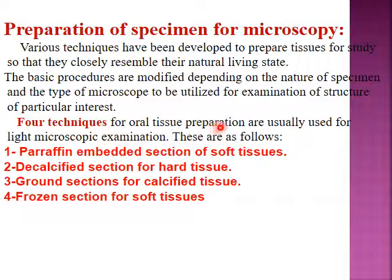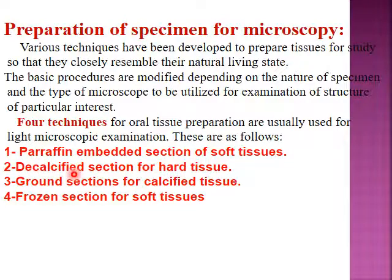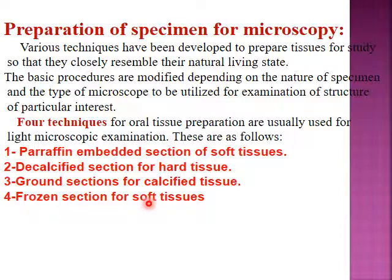We have four techniques used in oral tissue preparation, usually used for light microscopical examination. First, paraffin embedded section of soft tissue, which is the most popular type of section used in histology. Second, decalcified section for hard tissue. Third, ground section for calcified tissue — meaning enamel, dentine, and bone. Fourth, frozen section for soft tissue.